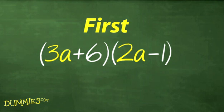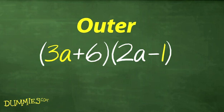F stands for the first term in each binomial, in this case, the 3a and 2a. O stands for the two outermost terms, those farthest to the left and right, the 3a and 1.